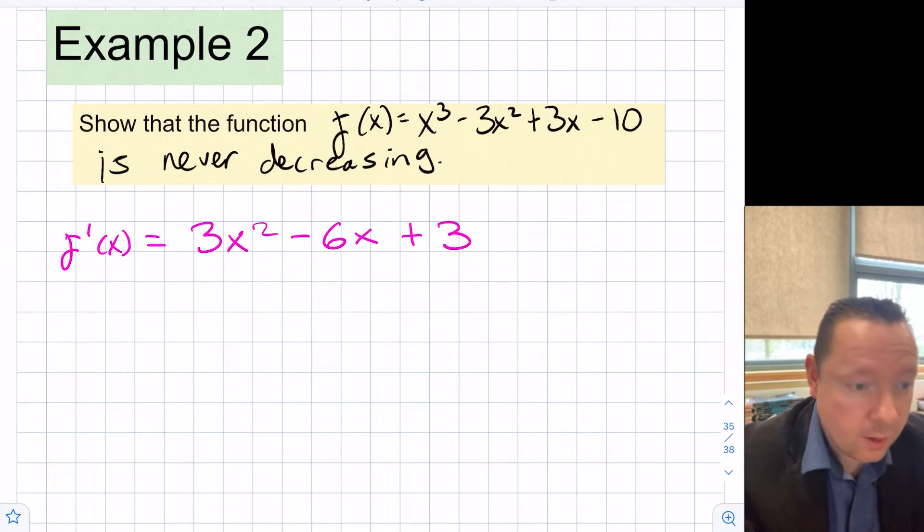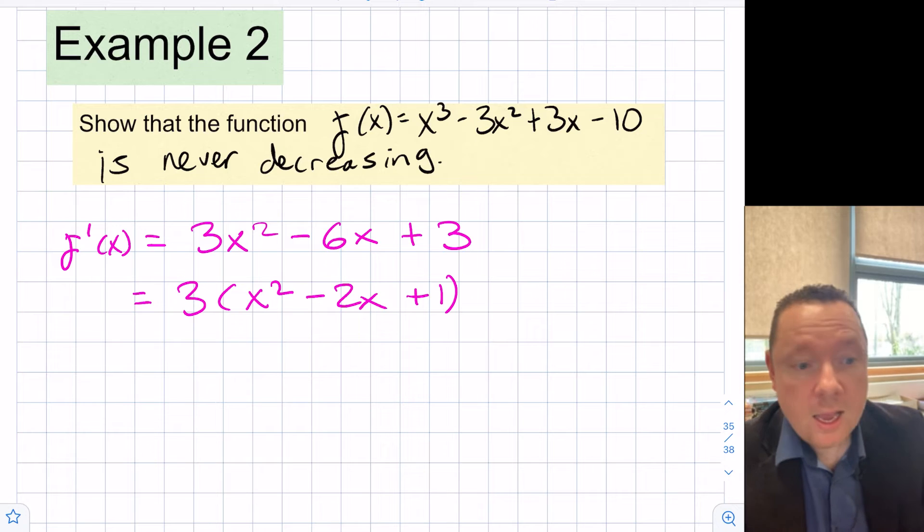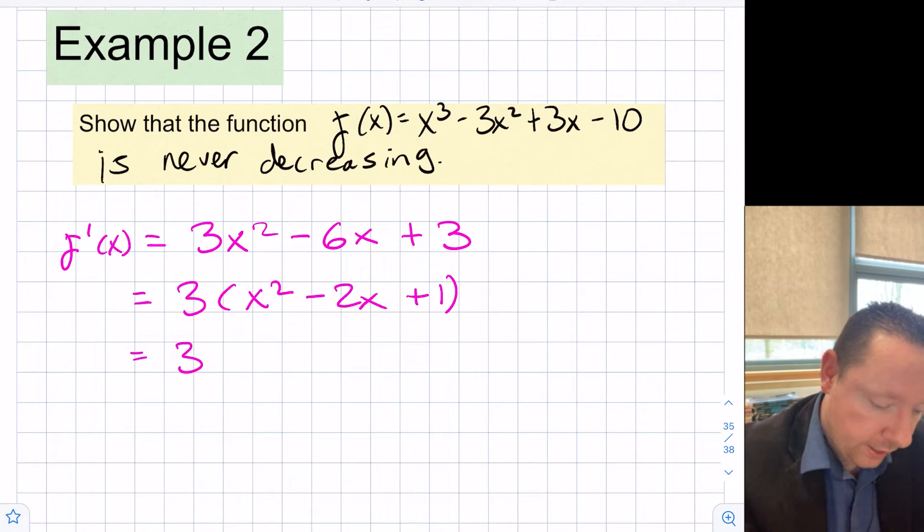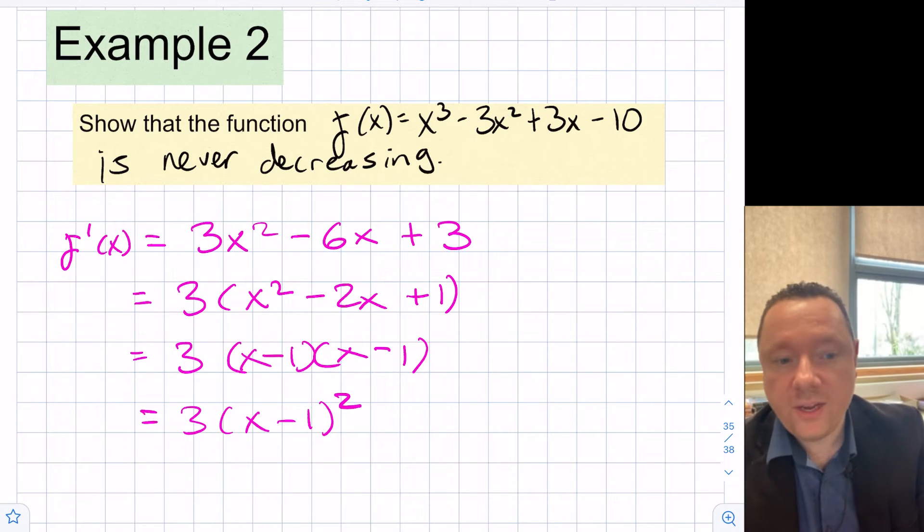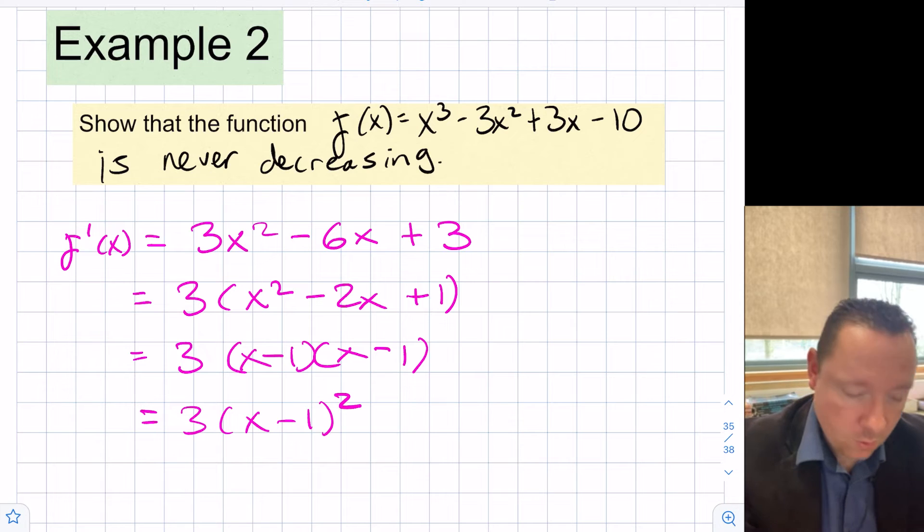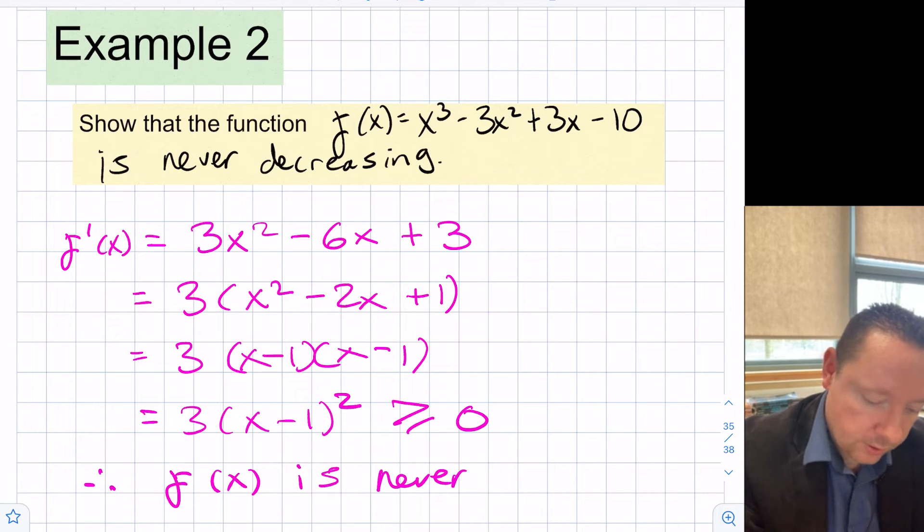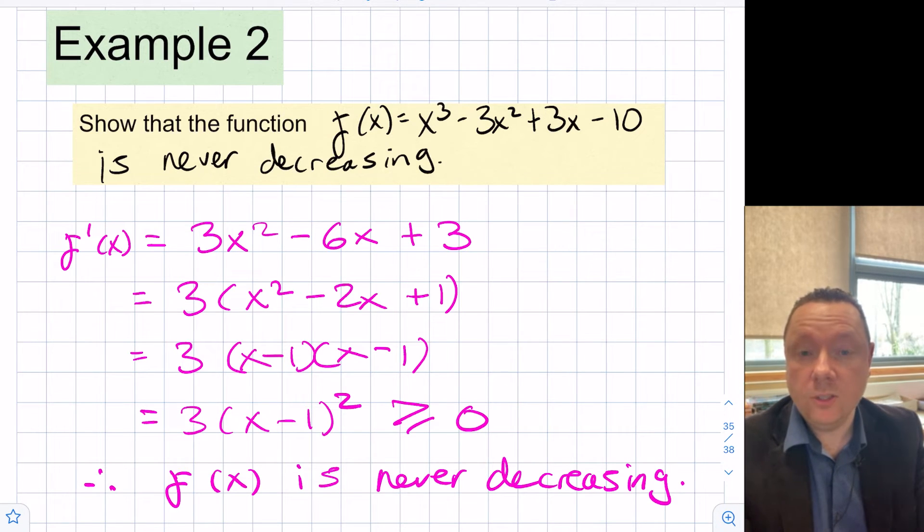Let's manipulate this. Taking 3 out as a common factor, we get x squared minus 2x plus 1. Factorizing that, we get 3 times x minus 1 squared. That's 3 times a square number, which is always greater than or equal to zero, and therefore f of x is never decreasing. Since we managed to make that a square number, we can say that straight away.